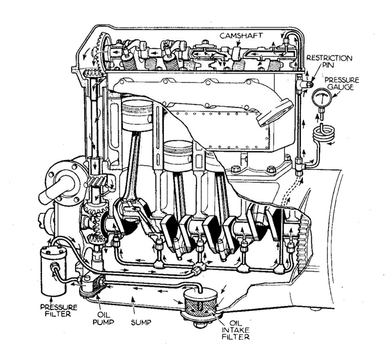As well as its primary purpose for lubrication, pressurized oil is increasingly used as a hydraulic fluid to power small actuators. One of the first notable uses in this way was for hydraulic tappets in camshaft and valve actuation. Increasingly common recent uses may include the tensioner for a timing belt or variators for variable valve timing systems.